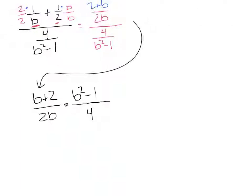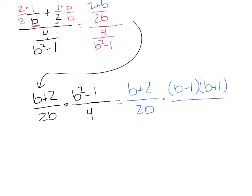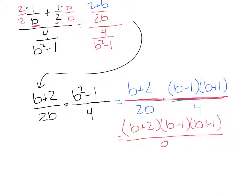Now I'm ready to flip fractions. We're going to have b plus 2 over 2b — I hope you're okay with me flipping those two terms, since addition allows it. Then multiply by the reciprocal of the denominator, which is b squared minus 1 over 4. Let's factor to see if we can simplify: b plus 2 over 2b stays as is. The numerator b squared minus 1 factors to (b minus 1)(b plus 1), all over 4. Unfortunately nothing cancels out, so I'm left with (b plus 2)(b minus 1)(b plus 1) over 8b as the final solution.